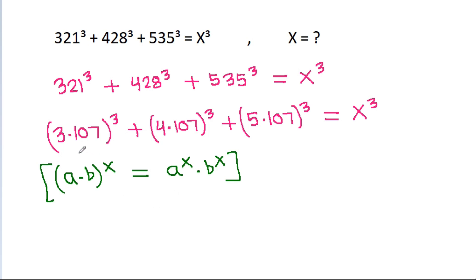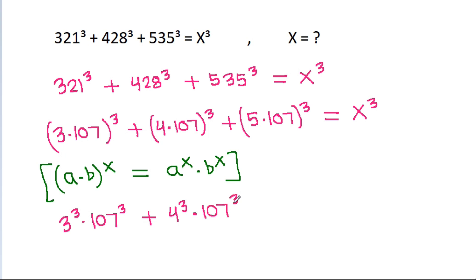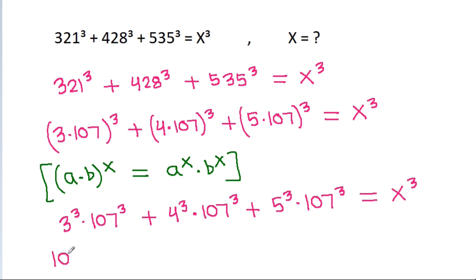So this will be equal to 3 cube times 107 cube, plus 4 cube times 107 cube, plus 5 cube times 107 cube, is equal to x cube. And we can take 107 cube common, giving us 3 cube plus 4 cube plus 5 cube equal to x cube divided by 107 cube.